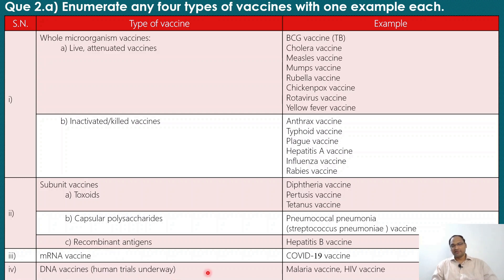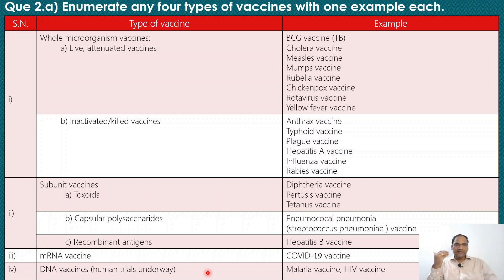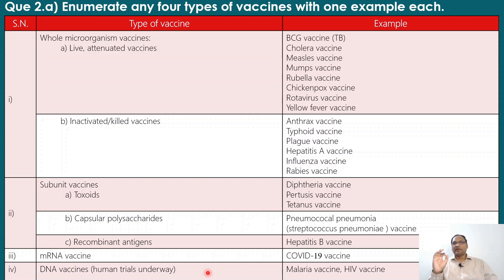Similarly, there is a DNA vaccine. In DNA vaccines, the gene itself is incorporated into the host — DNA is transcribed to RNA and then translated to protein — and a particular antigenic protein is made in the body, triggering antibody production. Human trials for DNA vaccines are currently underway. Examples include the malaria vaccine and the HIV vaccine.